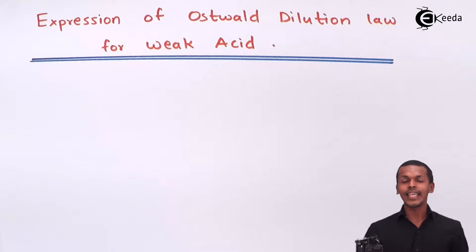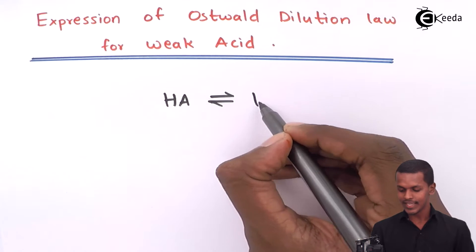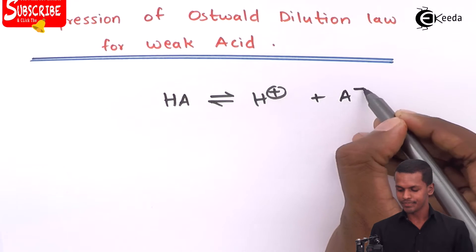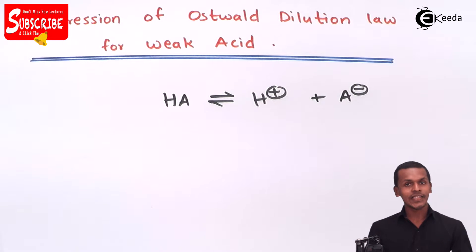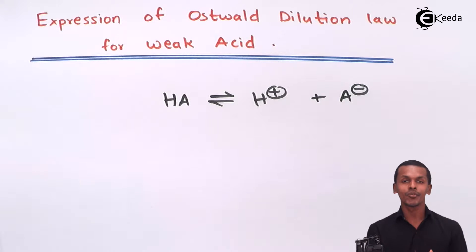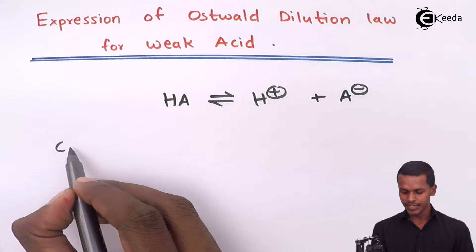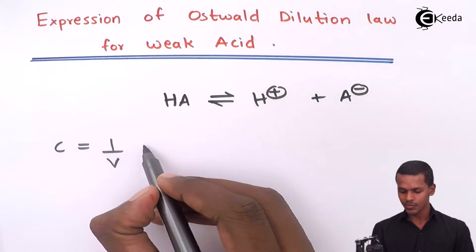In this case we are considering a weak acid, which I will generally name as HA, and which on dissociation gives H⁺ ion as well as A⁻ ion. Because it is a weak acid, an equilibrium will be maintained in this case, represented with a reversible arrow as you can see. The number of moles of the electrolyte taken is one mole of weak acid, so the concentration term will be 1/V, that is moles per dm³.